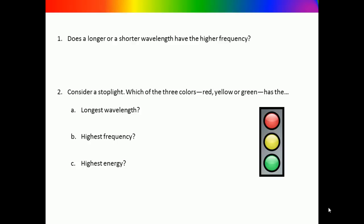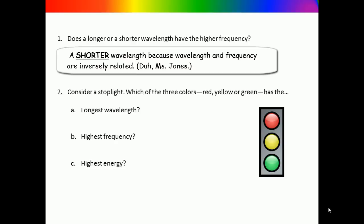Pause the video and try these problems which are in your notes. When you are ready, restart the video for the answers. The answer to number one is a longer wavelength because wavelength and frequency are inversely related—that is, as one increases the other decreases. The answer to 2a is red. Remember the colors in order of longest wavelength to shortest wavelength are red, orange, yellow, green, blue, indigo, and violet. The answer to 2b is green because green light has the shortest wavelength and therefore the highest frequency. The answer to 2c is green because green light has the shortest wavelength and therefore the most amount of energy.